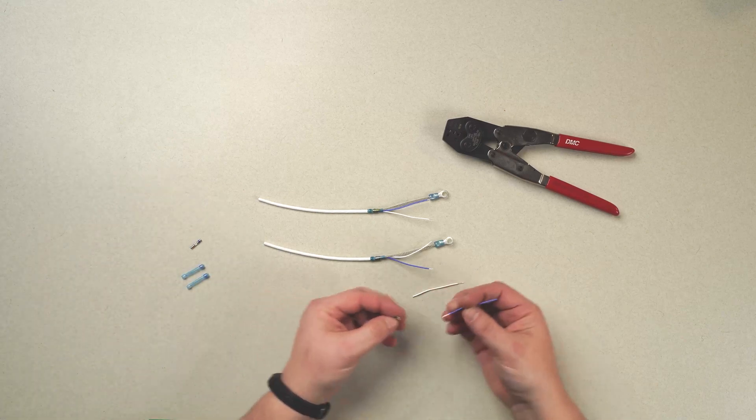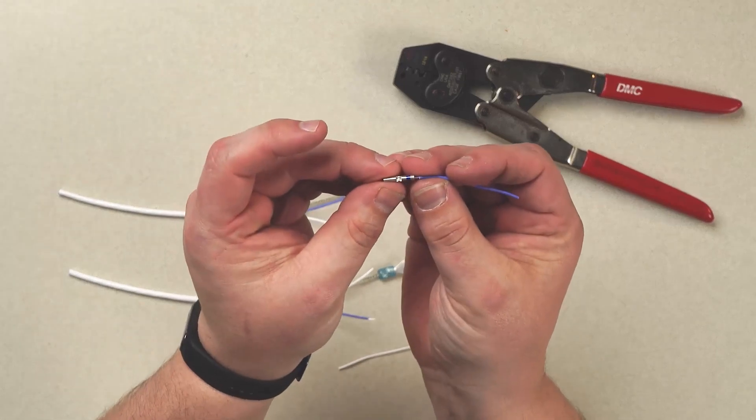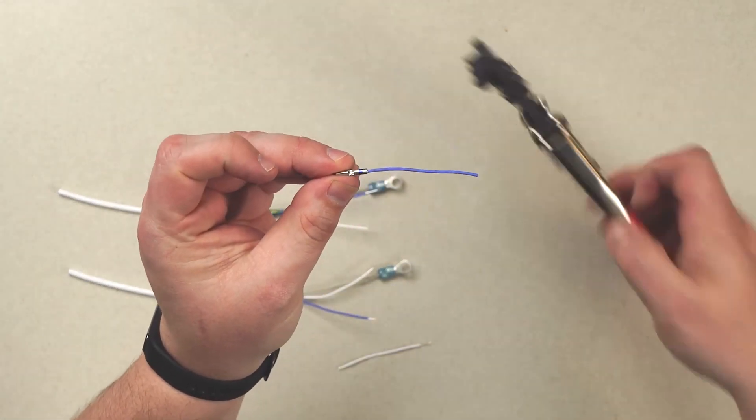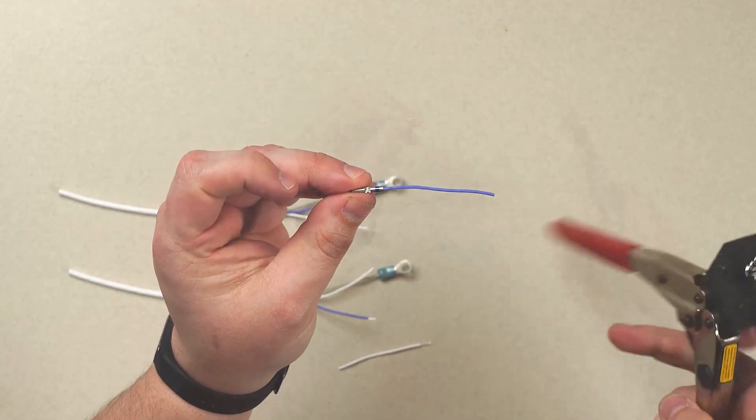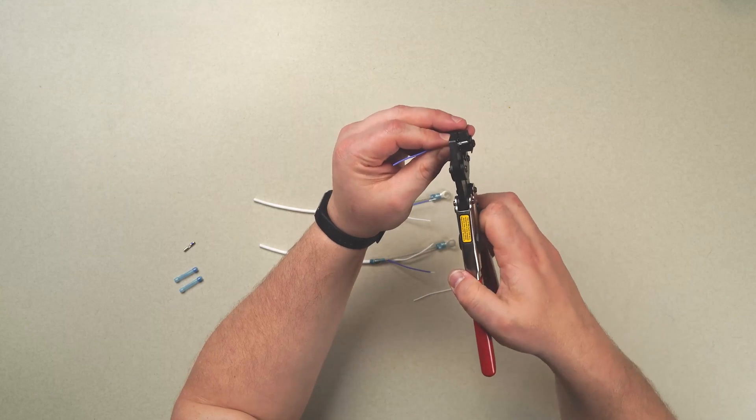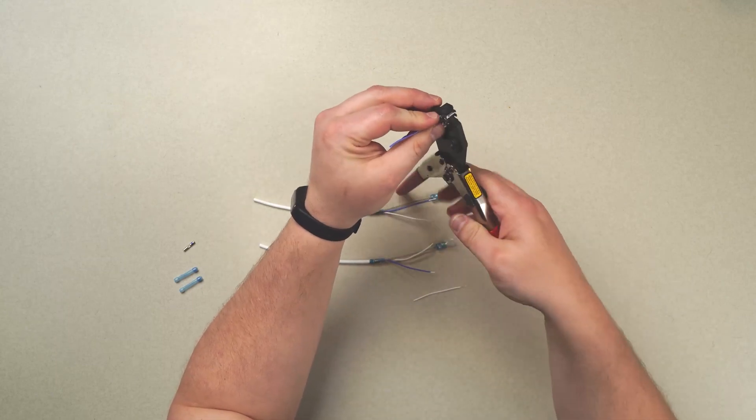Start with our splice and our lead wire, again, making sure that we have full penetration. We can see in the window in the center, the spliced wire is there, and we grab our crimping tool, lining it up with the proper color coating, and then applying the crimp.